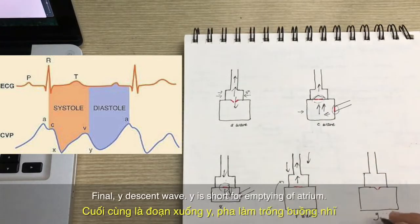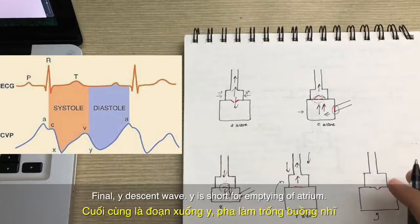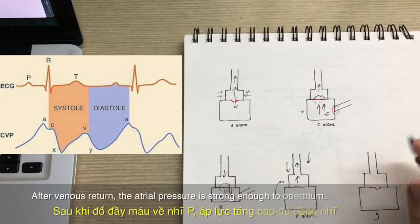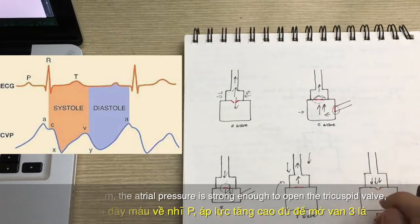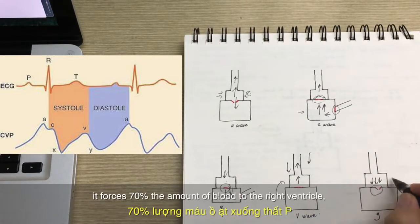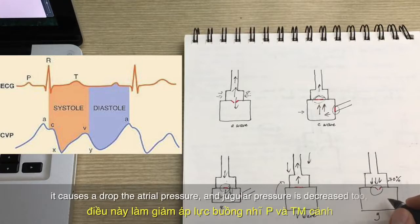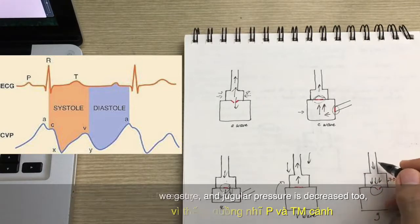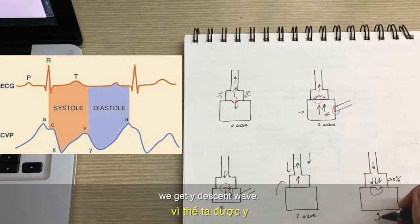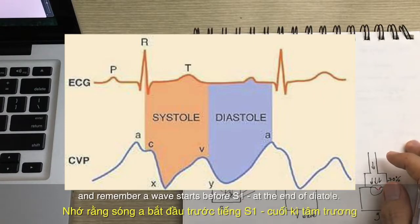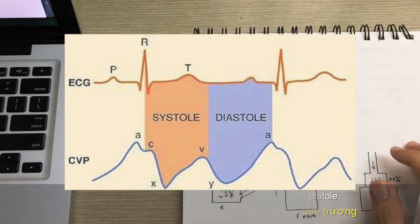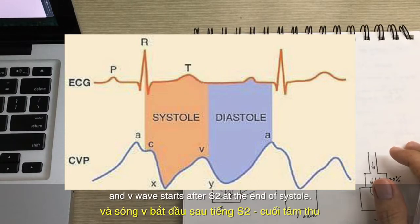And finally, this is the Y descent wave. Y is short for emptying of atrium. So after venous return, the atrial pressure is strong enough to open the tricuspid valve and forces the amount of blood to the right ventricle. And it causes a drop of the atrial pressure and the jugular pressure decreases too. So we get the Y descent wave. And remember that A wave starts before S1 at the end of diastole, and V wave starts after S2 at the end of systole.